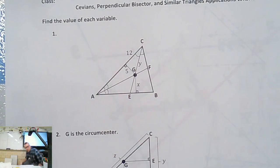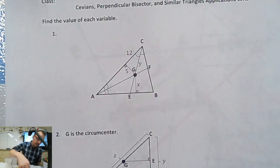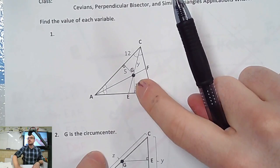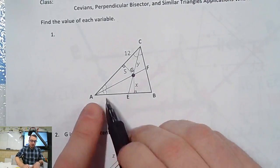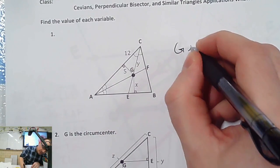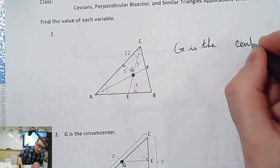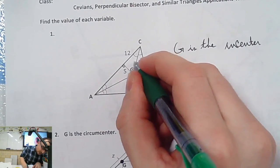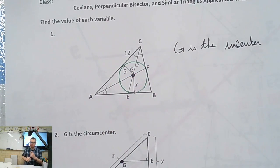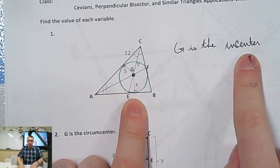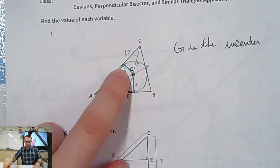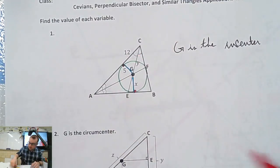Look at number one on the worksheet. What are we even looking at? What center must G be? We have angle bisectors — are those orthogonals? No, because they don't go from the vertex to 90. So those are angle bisectors. Where do the angle bisectors intersect? The in-center. Very good. The in-center is called the in-center because there's an inscribed circle. So G is inside a circle that's inscribed. So if this is a circle, what must the blue lines be? They're going from the center to the outside — they're radii. Which means if one of them is five, they're all five.